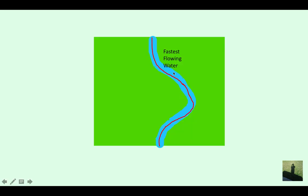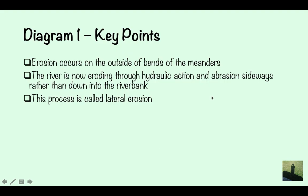Rather than eroding down and making the river deeper, it's eroding sideways and it's making it wider. This process is called lateral erosion. That's a key word there. That's a level nine word, lateral erosion.